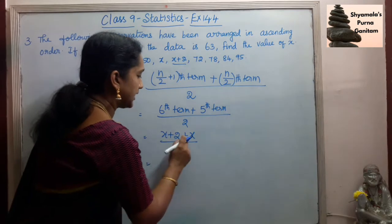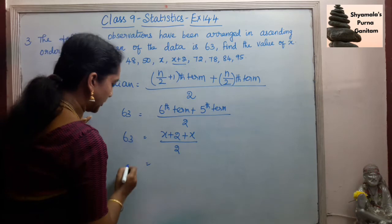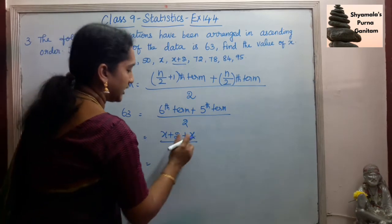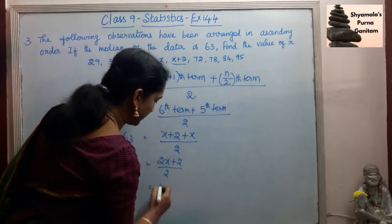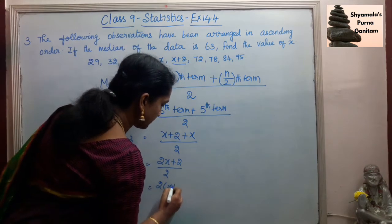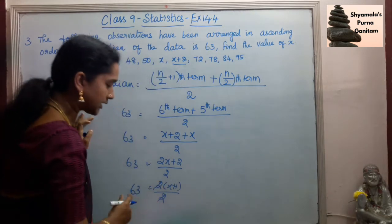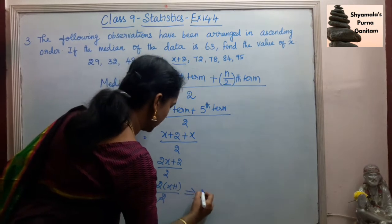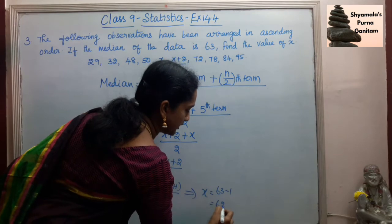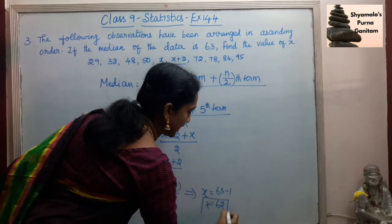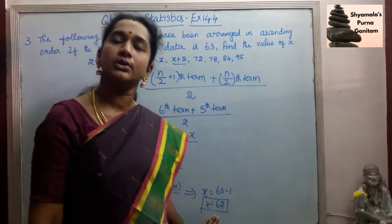So this is x. Here the median value is given as 63. So 63 is equal to 2x plus 2 by 2. So when we simplify this, 2 into x plus 1 by 2 we are getting. So 2 and 2 will get cancelled. So 63 is equal to x plus 1. So we will get x is equal to 63 minus 1. So that is 62. So x value is 62.